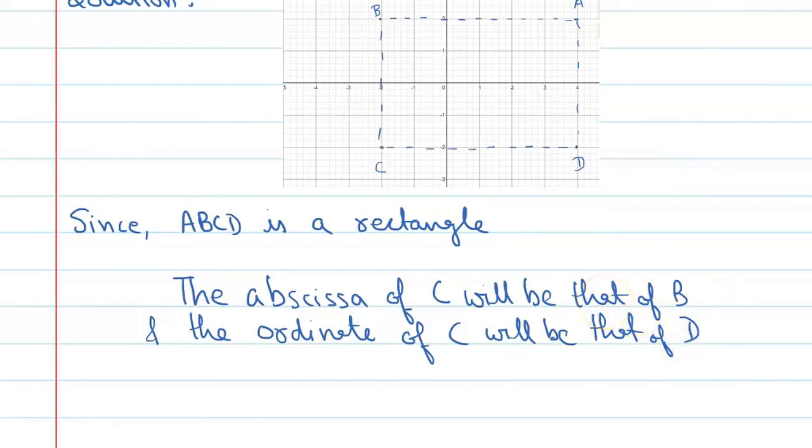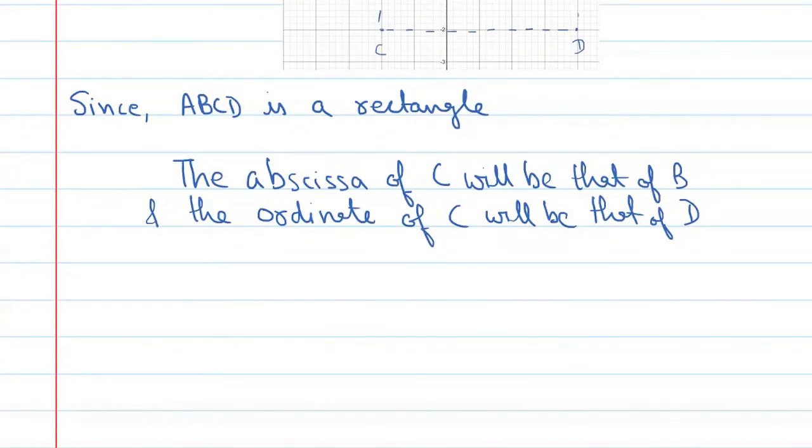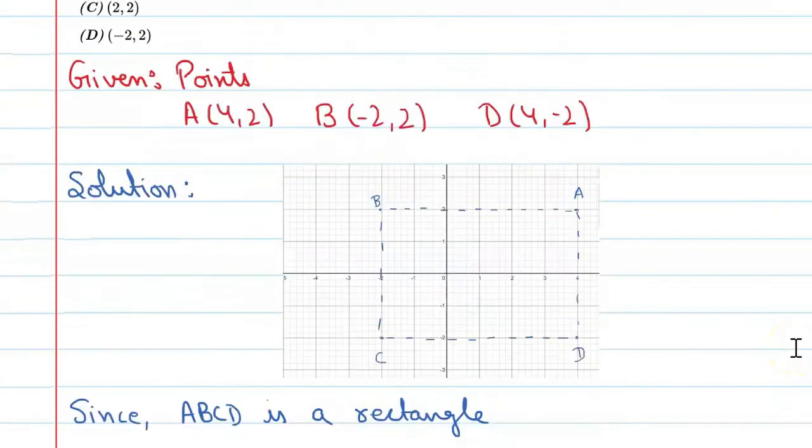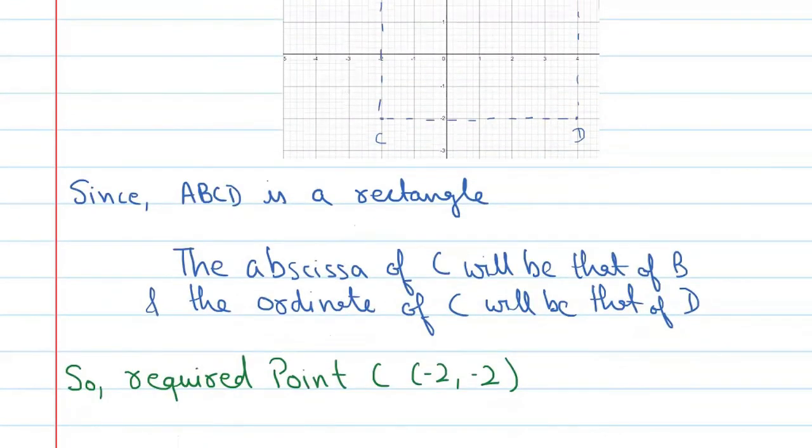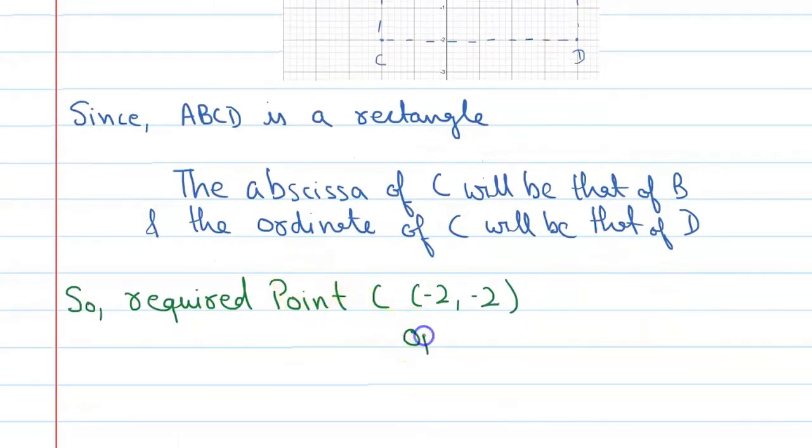So here we will find the answer. So we can say the required point C is -2,-2. And in this, the correct option will be B. So the correct option is B.